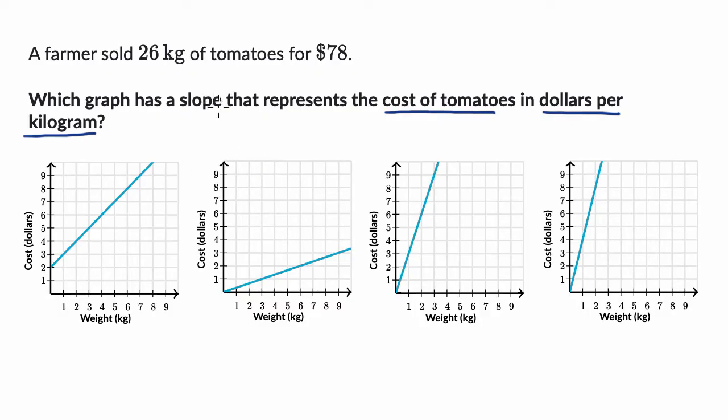If we're thinking about slope, slope is all about the change in the vertical axis divided by the change in the horizontal axis. Sometimes you see slope equals change in Y over change in X. In this case, we could say Y is the cost in dollars, X is the weight in kilograms.